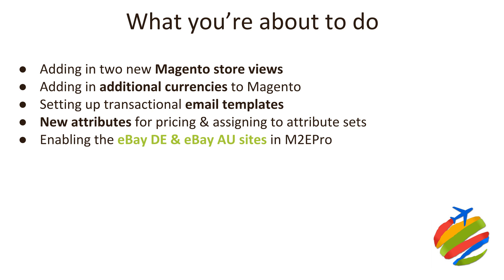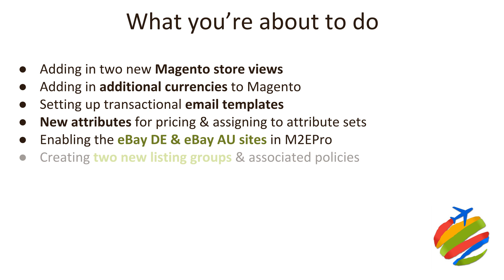We're then going to be enabling eBay DE — eBay Germany — and eBay Australia sites with M2E Pro. It's just two dropdown boxes, so it's incredibly easy. Just select them and press a button — job done.